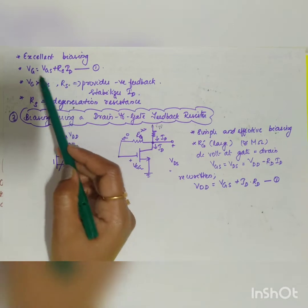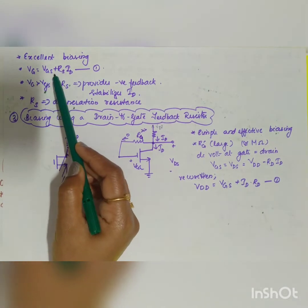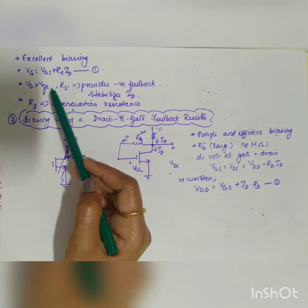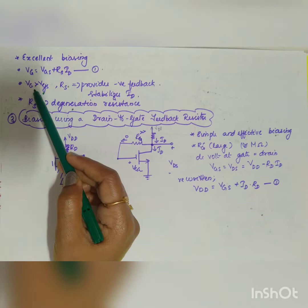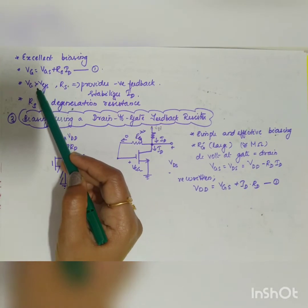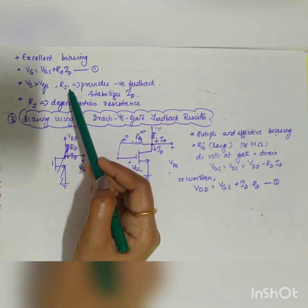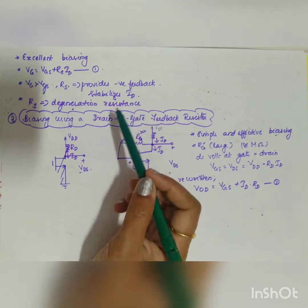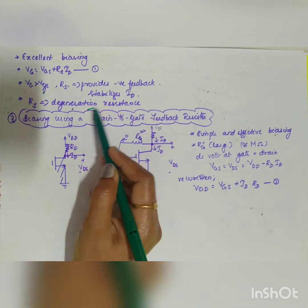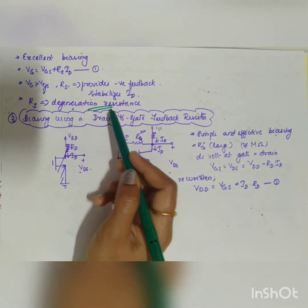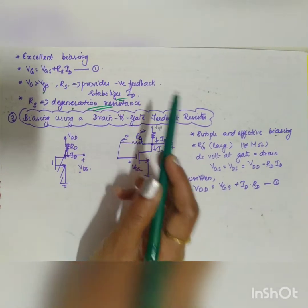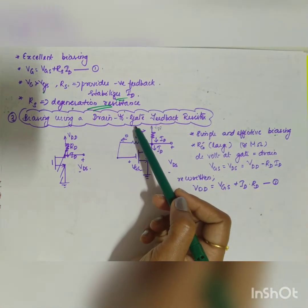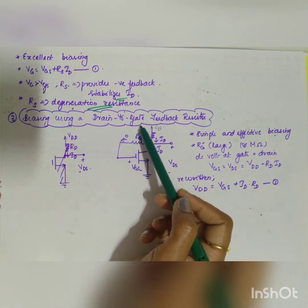In summary: VG = VGS + RS × ID. When VG is greater than VS, VGS is determined accordingly. RS provides a negative feedback and is also called the degeneration resistance, as it stabilizes ID.